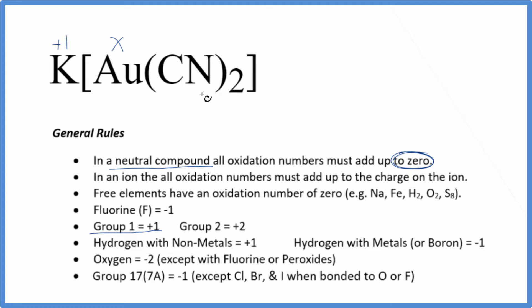Then we get to the C and the N. This is a little confusing; we don't have a rule for this. What we need to recognize is that CN is the cyanide ion, and the whole ion has a -1 ionic charge.